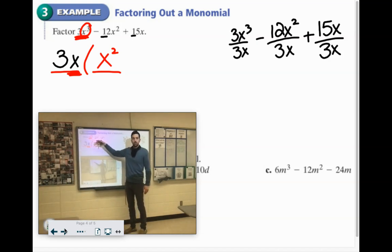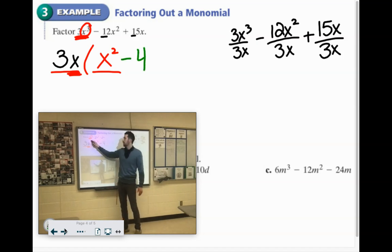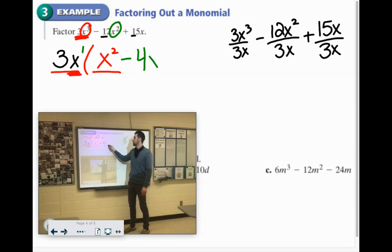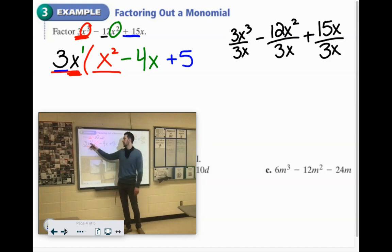3, I need negative 12. So 3 times negative 4 would give me negative 12. I have x to the first power. I need x to the second power. So I need one more x. And we'll clean this up as last step here. Last one, 3 times what would give me positive 15? 3 times positive 5. And I have x to the first. I need x to the first. I don't need any more x's.